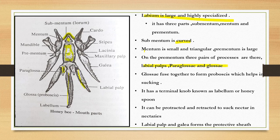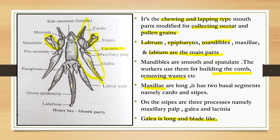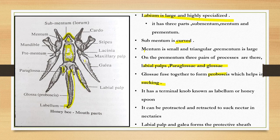The glossae are fused together to form part of the prementum. The glossae are fused into a single structure, and this forms the prementum which helps in sucking. It has an internal lobe called the labellum, or honey spoon, which can be protracted and retracted to collect nectar. The labial palp and galea form a protective sheath.